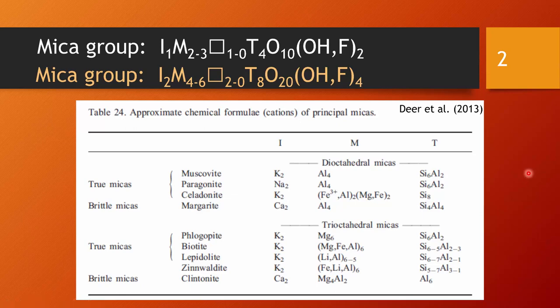Dioctahedral micas have in the simplified structural formula two metal ions on the M position, whereas the trioctahedral micas have three ions on this octahedral M position. This is not quite obvious from this table because it uses the duplicated structural formula which makes four cations on the M position and six cations on the M position instead of two and three.